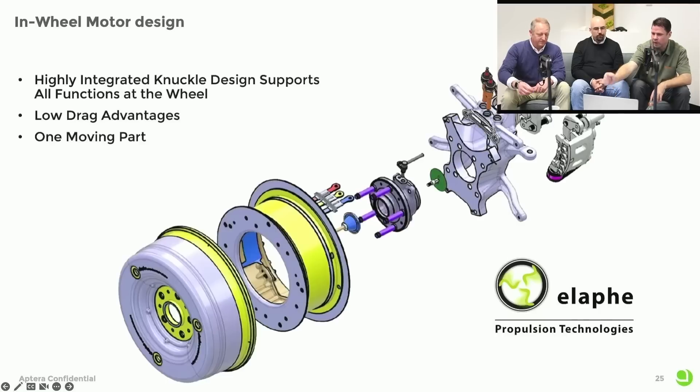This is the motor breakout. It's significant to point out that the upright—the thing that holds the motor to the suspension—is actually part of the motor. So we were able to reduce part count and reduce weight, and it's a much easier assembly to put together. To be clear, this is not their motor. This is the one that we co-developed.